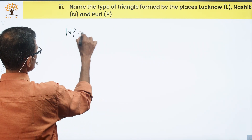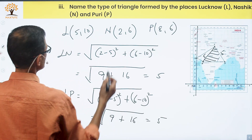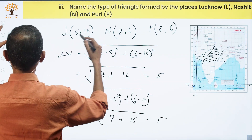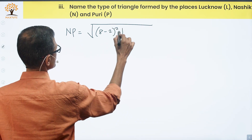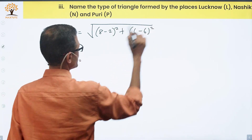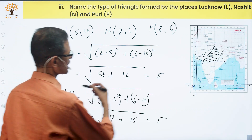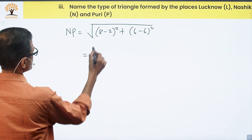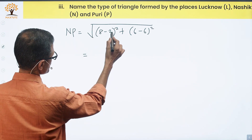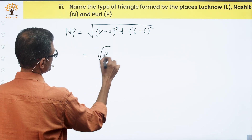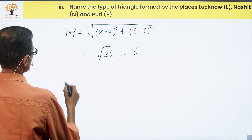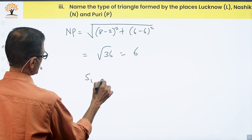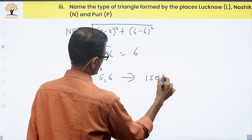NP (Nashik to Puri) = √((8−2)² + (6−6)²) = √36 = 6. So the sides of the triangle are 5, 5, and 6. Since two sides are equal, this is an isosceles triangle.